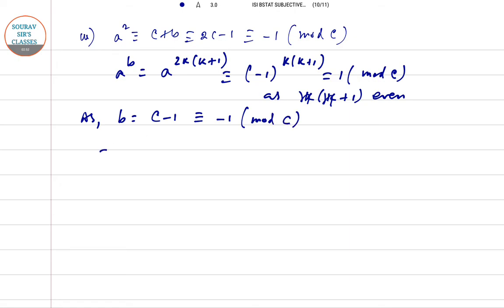Now as B equals C minus 1 modulo C, so we can write B to the power A equals B to the power 2N plus 1. So that is 1 whole to the power 2N plus 1. That is minus 1 is the remainder modulo C.